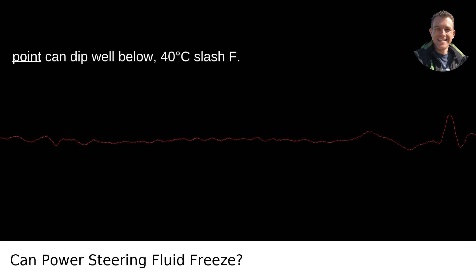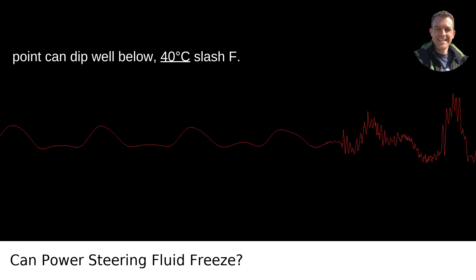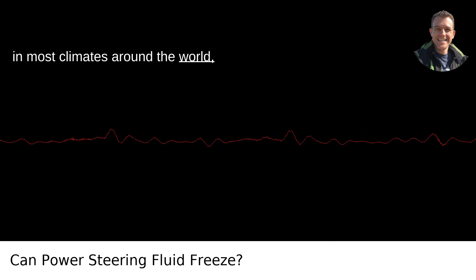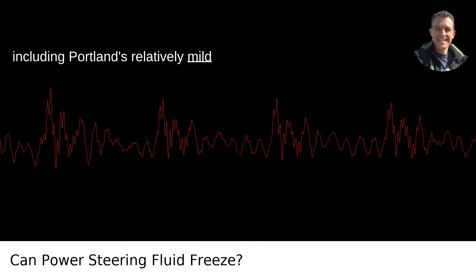However, the actual freezing point can dip well below -40°C/-40°F. This makes it pretty resistant to freezing in most climates around the world, including Portland's relatively mild winters.